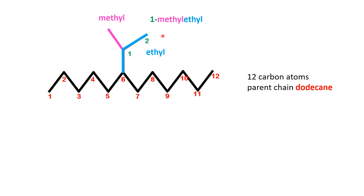Finally, combine the names. The branch methyl is identified, and its position on the ethyl chain — 1 — is specified. Together, the substituent is named 1-methylethyl.